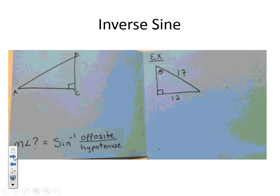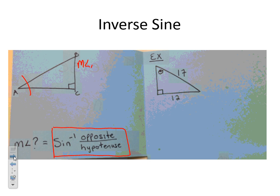We're going to start with inverse sine. When we do inverse sine, in order to find an angle measurement using sine, we're going to do the inverse of sine of opposite over hypotenuse. So if I want to find the measure of angle A, I'm going to set that equal to the inverse of sine — make sure you have that sine to the negative one.